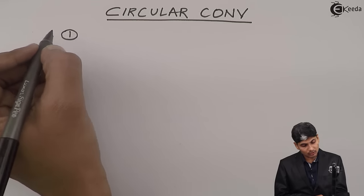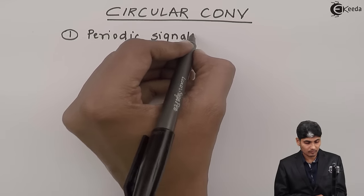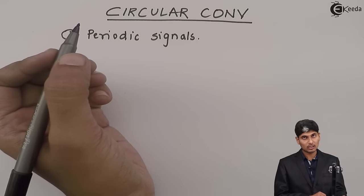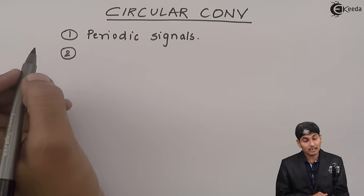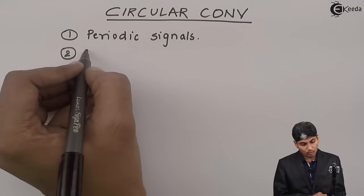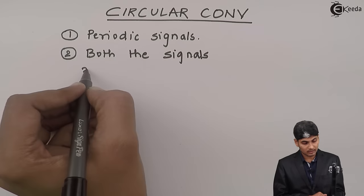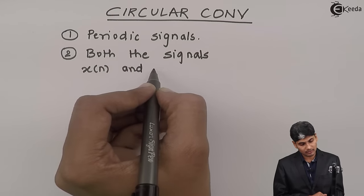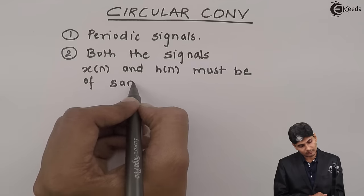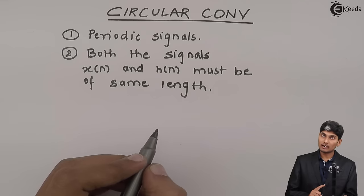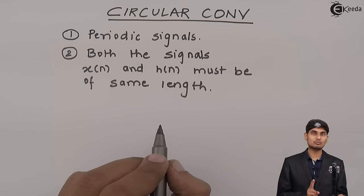Circular convolution is used only for periodic signals. If the signals are periodic then only we go for circular convolution — that is a mandatory condition. The first mandatory condition is signals to be periodic. The second mandatory condition is both the signals should be of same length.